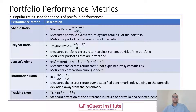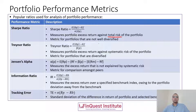The Sharpe ratio measures excess return against the total risk of the portfolio. The key point here is that this is total risk, because sigma captures both systematic and unsystematic risk in the portfolio. This is a popular metric whenever we have to analyze or compare portfolios that are not well diversified.